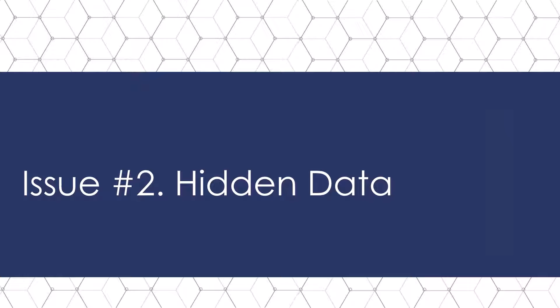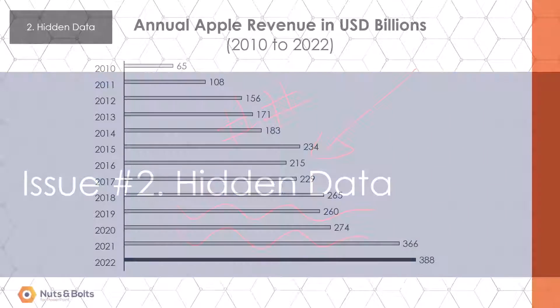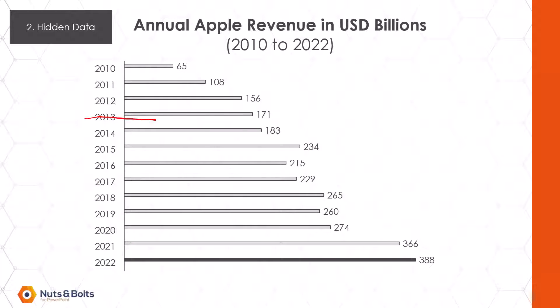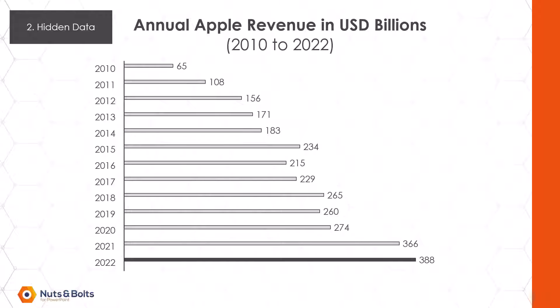Next, let's look at the hidden data issue, which is something I see in more and more people's charts — just accidentally leaving hidden data or hidden numbers inside of their Excel chart, which influences the thickness of your charts. Here on the next slide, I have an example of hidden data for a bar chart. Developing your PowerPoint eye, notice that these years don't perfectly line up with the bars. This is a hint that someone has left hidden numbers inside of the Excel spreadsheet, and that's what's pushing these bar charts and making them so skinny.